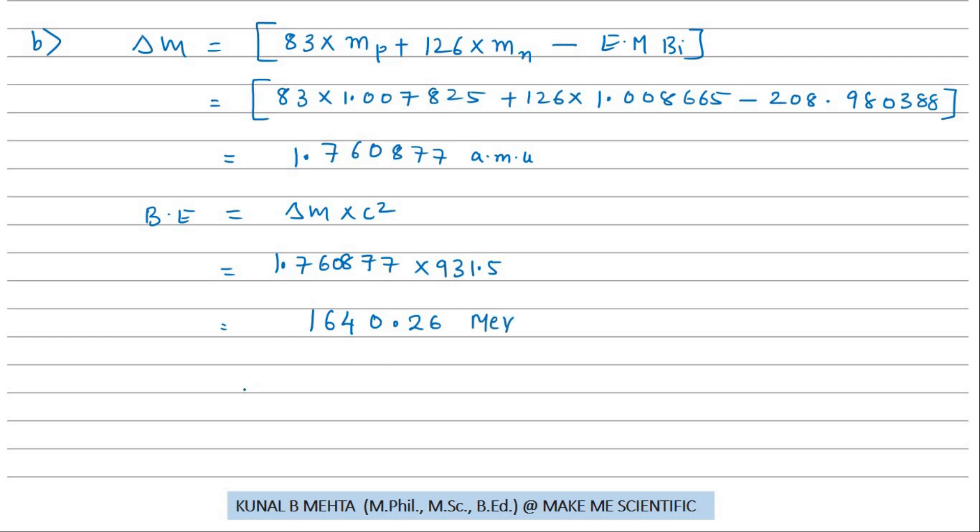There are 209 total nucleons in the nucleus. If I am asked to find binding energy per nucleon, I divide this number by 209, which is about 7.848 MeV per nucleon.